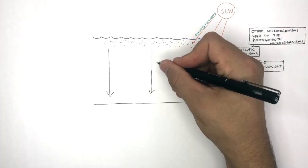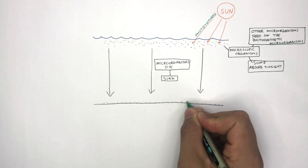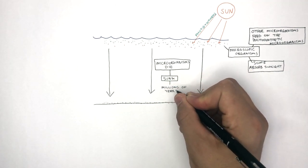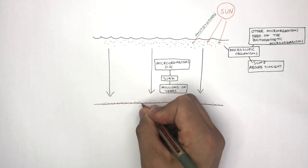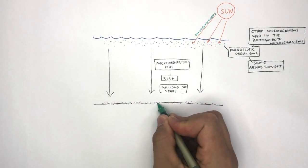Over time, these microorganisms die and then sink to the bottom. This happens over millions of years, as more microorganisms die and sink to the bottom, building up the concentration of how much is in the sediment.